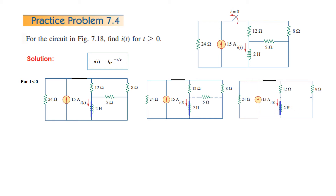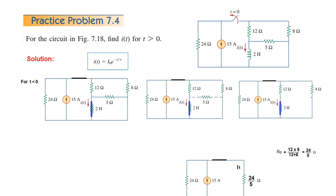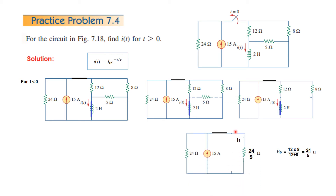We have 15 ampere current divided into the left-hand side and the right-hand side. We are interested in this current here. First of all we have to solve the parallel combination, which gives 24 over 5. Our equivalent circuit becomes like this, and we name this current as I1. We will calculate I1 by CDR — current division rule.